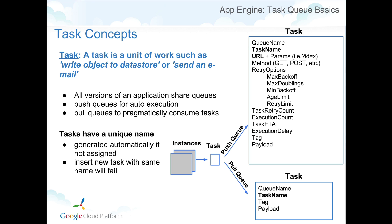There are a few basics about all tasks. Each one has a name when you put it on the task queue. If you don't specify one, it will automatically generate one. If you try to put a task on the queue with the same name, it will actually fail. The parameters you can control for a push queue are shown at the top, and the data and parameters for a pull queue are shown at the bottom. Notice there's a lot more information about a push queue.